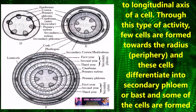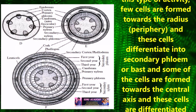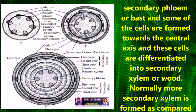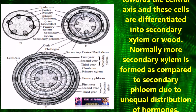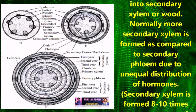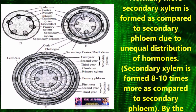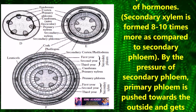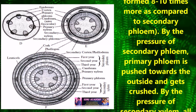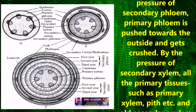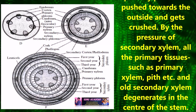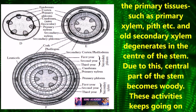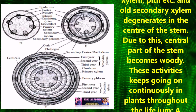Vascular cambium is formed as a complete ring made up of a single layer of cells. In dicot stem, some part of the vascular cambium ring is primary and some part is secondary. Two types of cells are formed in this ring: fusiform initials and ray initials. Fusiform initials are long with pointed ends, while ray initials are spherical or oval.